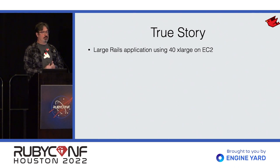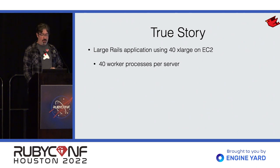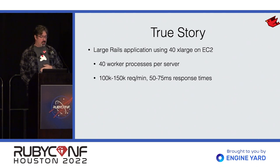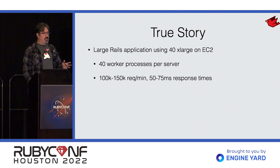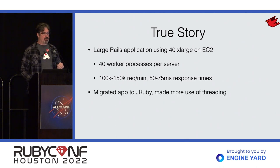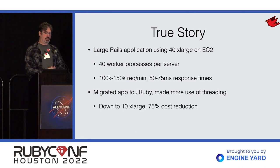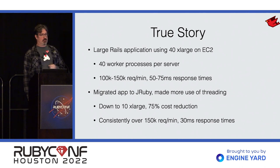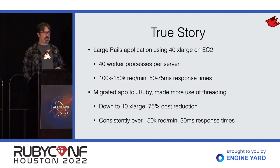A true story: some years ago there was a large Rails application using 40 extra-large EC2 instances, at enormous AWS cost, with 40 worker processes per server to max them out — getting about 100,000–150,000 requests per minute with 50–75 ms response times. They looked at JRuby — it took a couple of weeks of replacing some libraries, making configuration changes, and using more threads instead of workers. That brought them down to 10 extra-larges: a 75% reduction in AWS costs. They were consistently doing better than 150,000 requests per minute with lower response times. It's worth the effort to give JRuby a try.